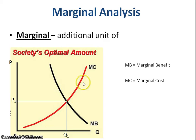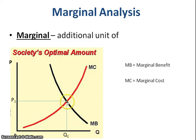Marginal cost, on the other hand, is the additional cost from consuming or utilizing one additional unit. And in this case, you can see the marginal cost is increasing as output is going up.